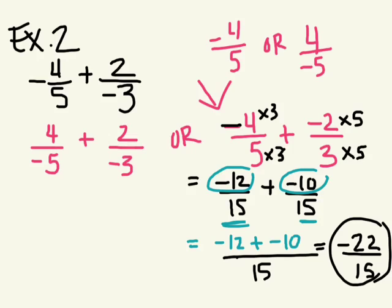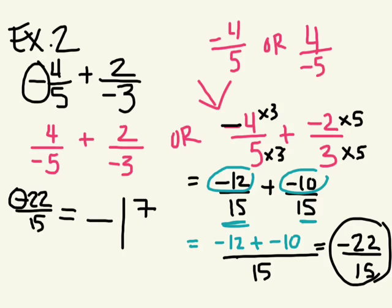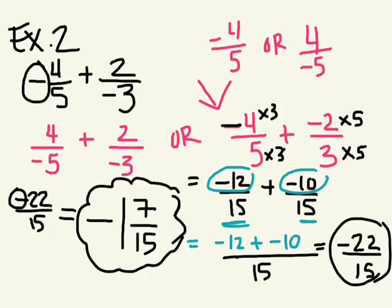Is that lowest terms? No. How do you turn an improper fraction? I want to know what this is as a mixed number. We know, we remember that it indicated a negative, so it's negative because this fraction is negative. Negative 1 and 7 over 15 in lowest terms, and that's the answer.